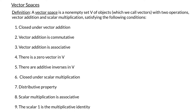In this video we're going to talk about vector spaces. I'm going to define what a vector space is and then we'll look at some examples. A vector space is a non-empty set V of objects, which we call vectors, with two operations: vector addition and scalar multiplication, and it has to satisfy the following conditions.